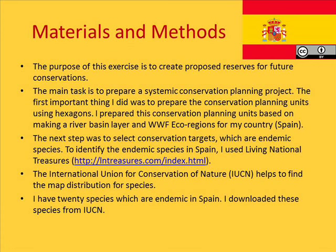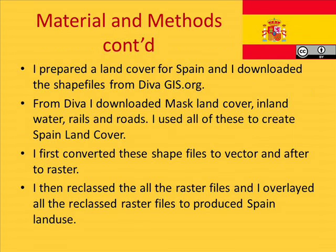The next step was to select conservation targets, which are endemic species. To identify the endemic species in Spain, I used Living National Treasures. The International Union for Conservation of Nature, also known as the IUCN, was used to find map distributions for the species. I have 20 species which are endemic in Spain. I prepared a land cover for Spain and downloaded shapefiles from DIVA-GIS.org, including mask, land cover, inland water, rails, and roads.